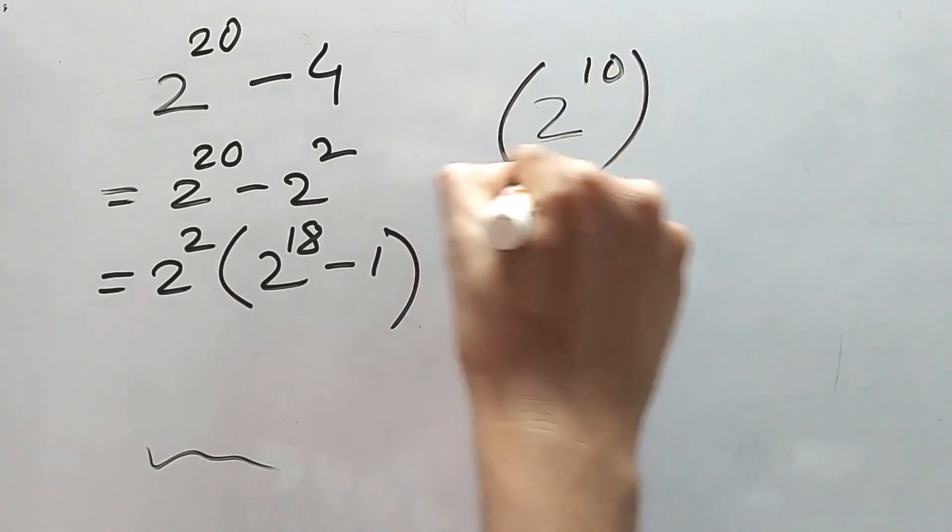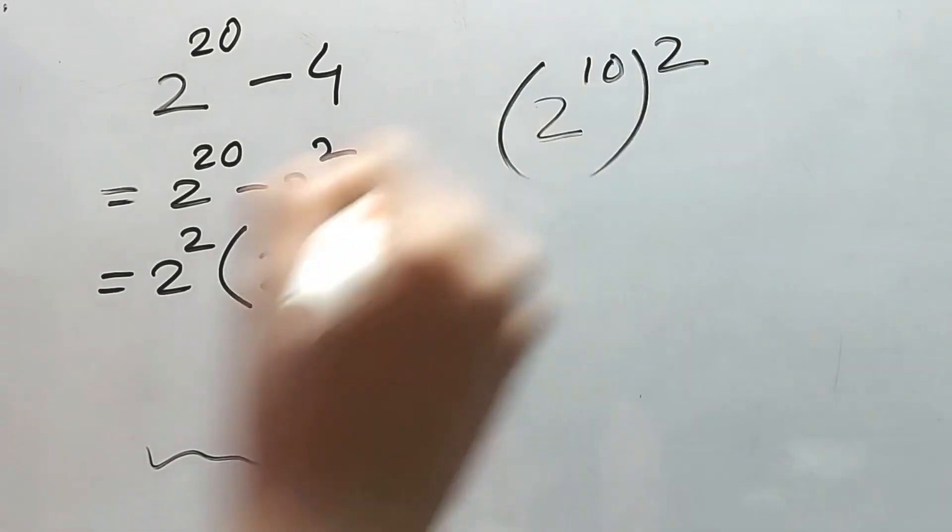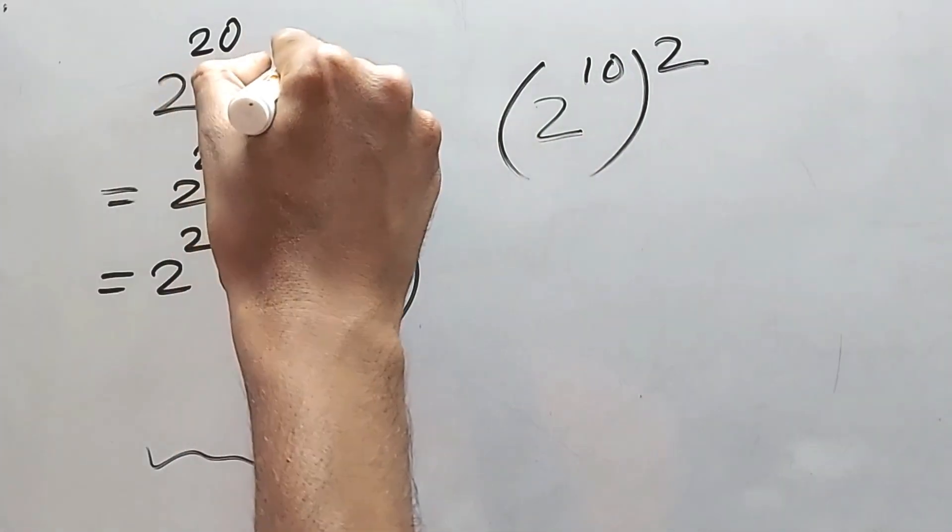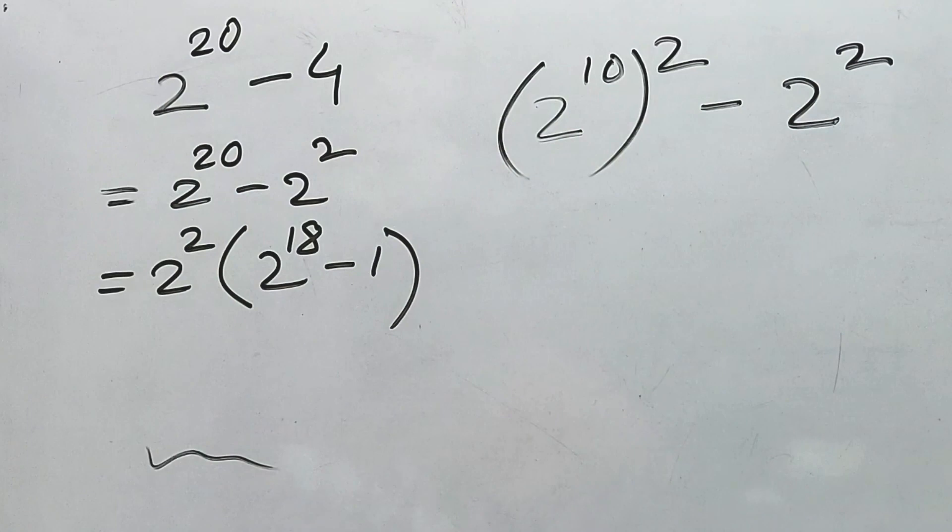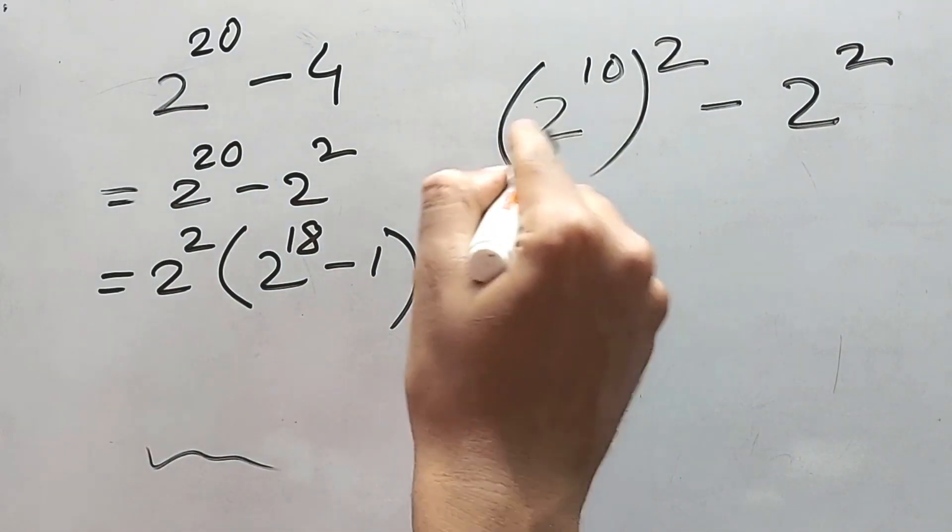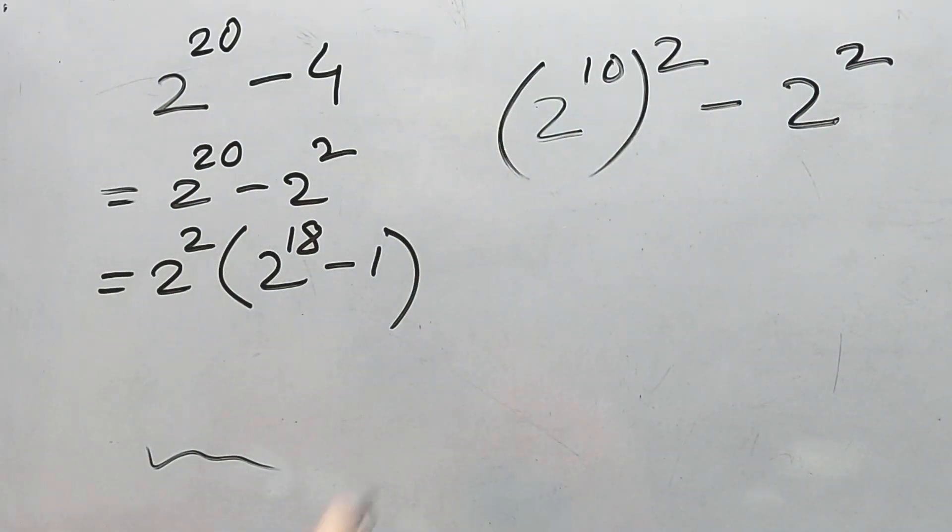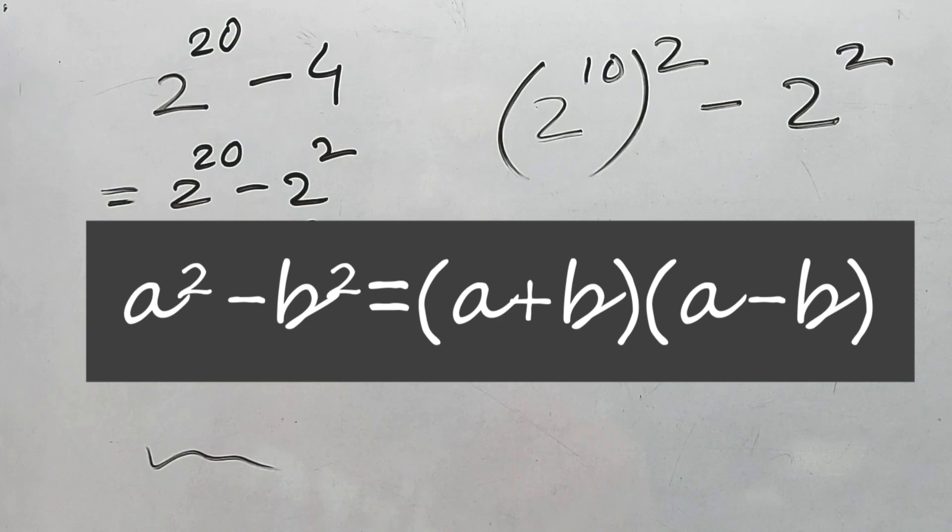So 2 to the power 10 whole square. This is 2 to the power 20, right? And this 2 square also we can keep it as it is. Now this is a square minus b square. We know the formula of this, right? a plus b into a minus b.